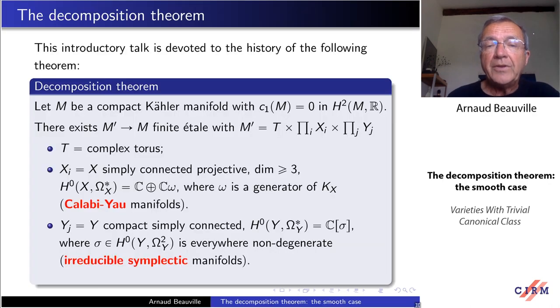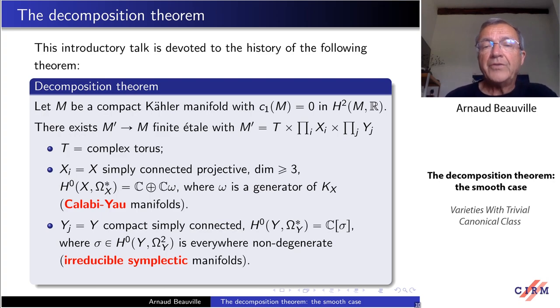And the third type, the yj, which appear, also compact simply connected Kähler, and the algebra of holomorphic forms is a polynomial algebra in one two form, sigma, which is everywhere non-degenerate in other terms. It's a symplectic form, and all the forms that we have on y are just the powers of this form, and these are called irreducible symplectic manifolds, or for reasons we will see later also hyperkähler manifolds. This is a nice structure theorem. Up to finite étale cover, we have a rather precise description of the manifolds which can appear.